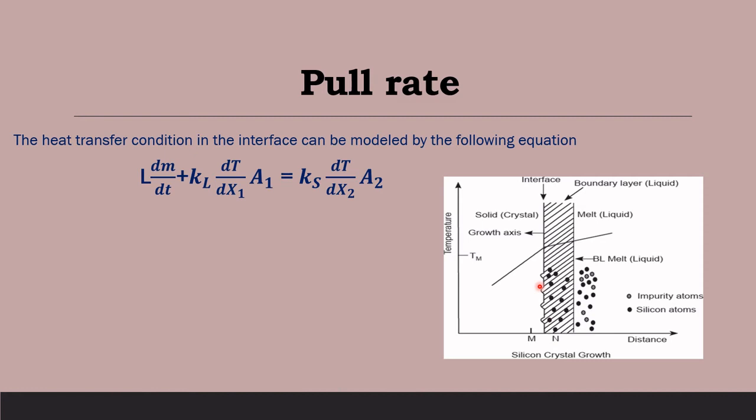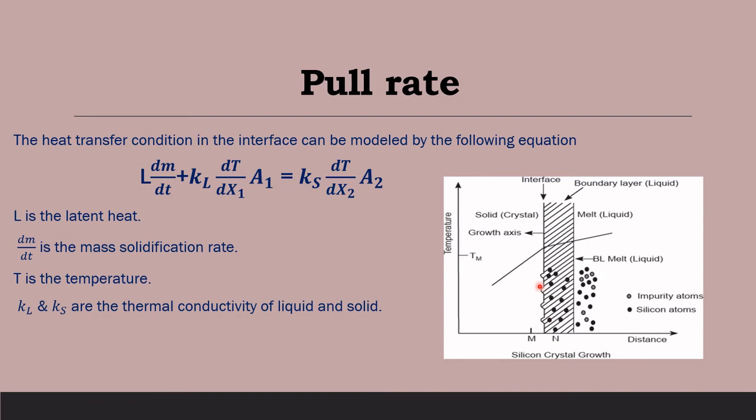This is the heat transfer condition at the interface. Where L is the latent heat, dm/dt is the mass solidification rate, T is the temperature. KL and Ks are the thermal conductivity of liquid and solid. dT/dx1 and dT/dx2 are the thermal gradients at point M and N.